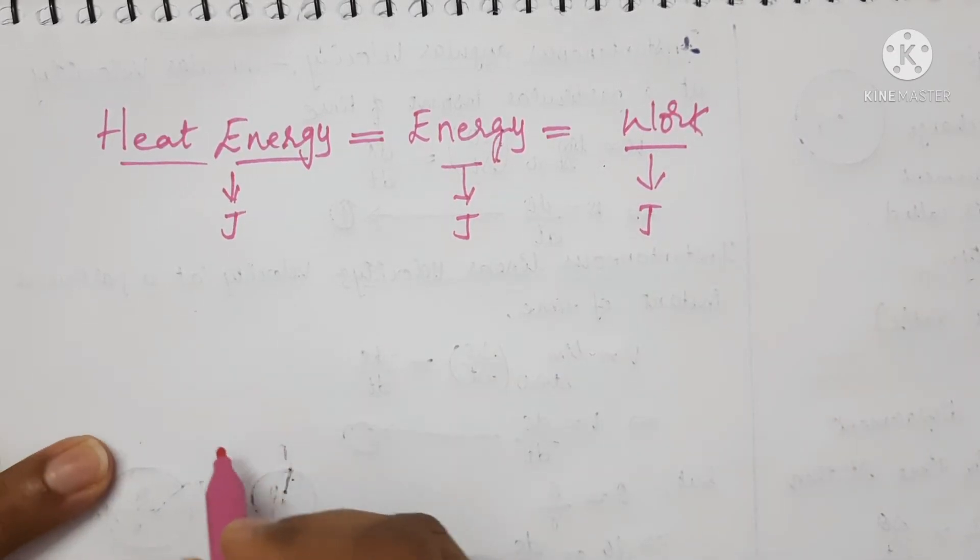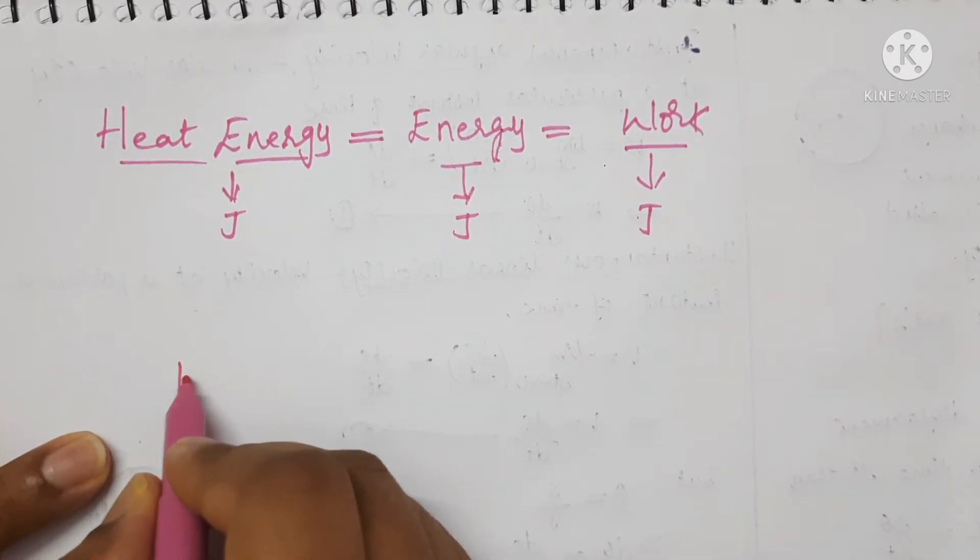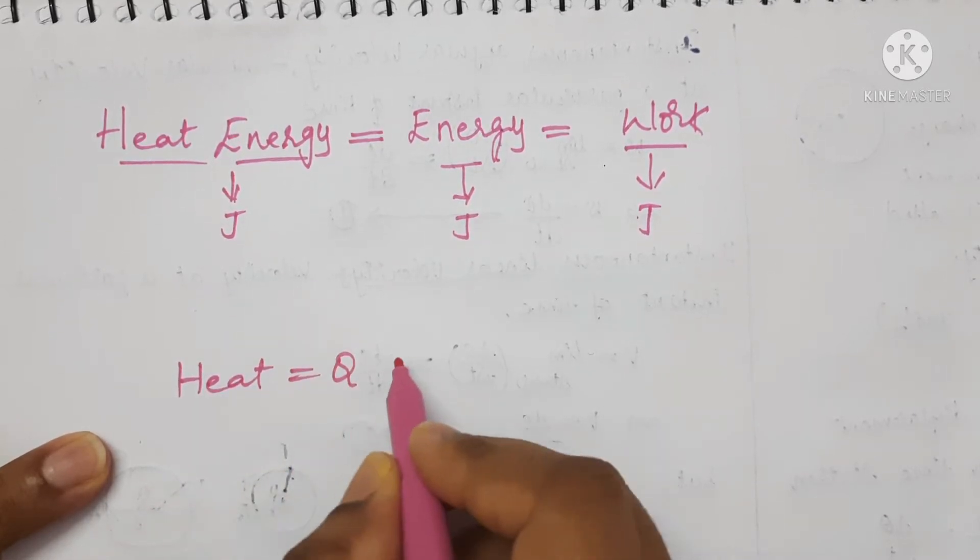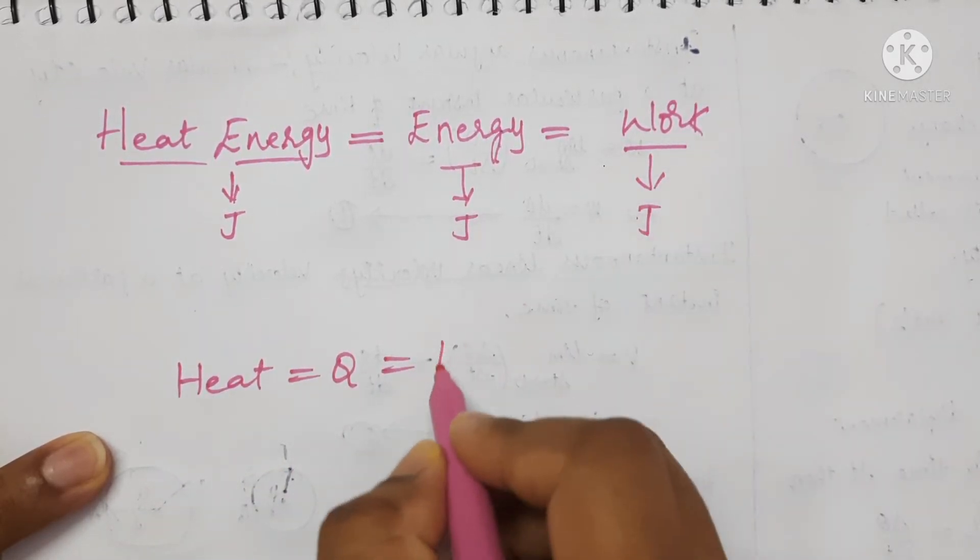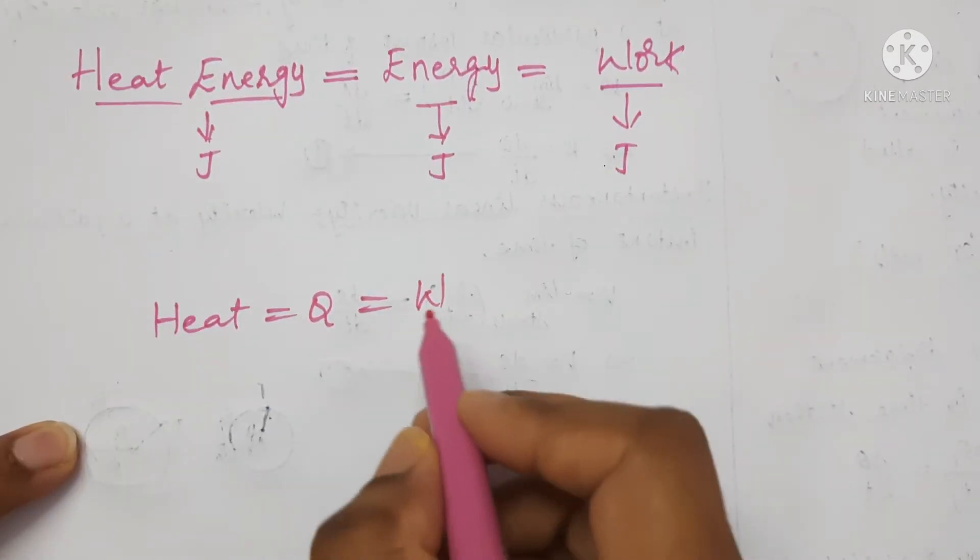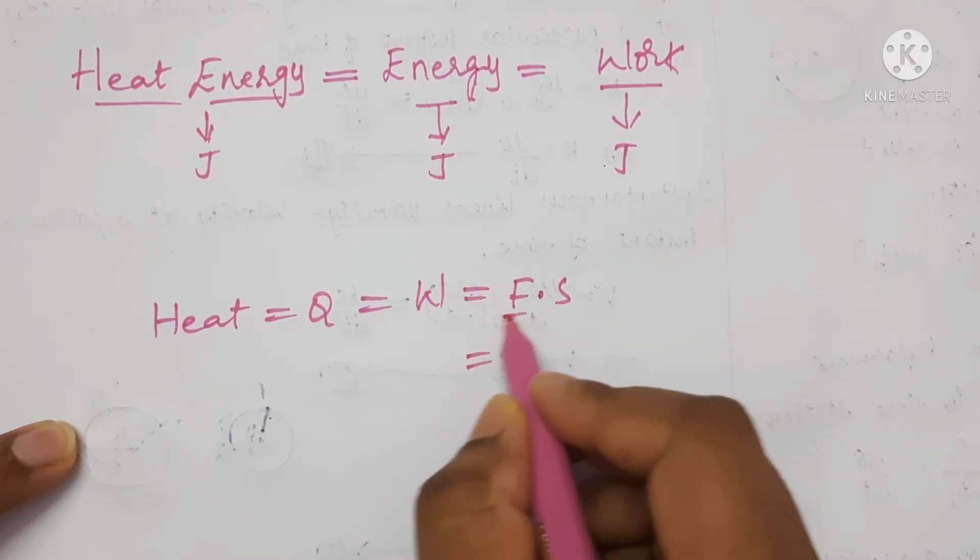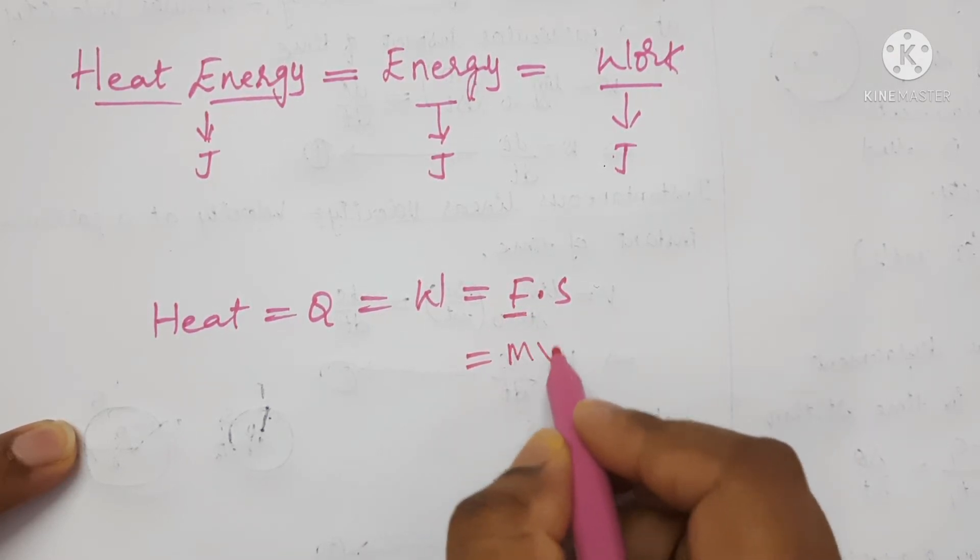Let us see here. Heat energy is represented with Q, which is equal to I am replacing with work done. Formula for work done is force into displacement, which is equal to again formula for force is mass into acceleration.